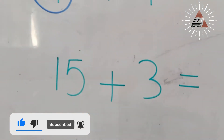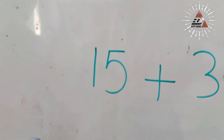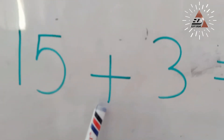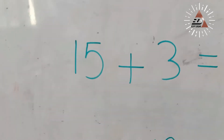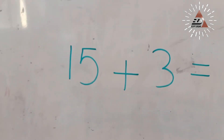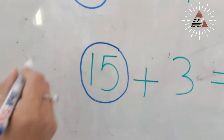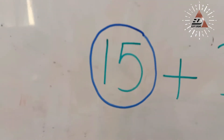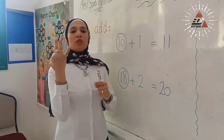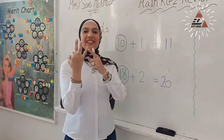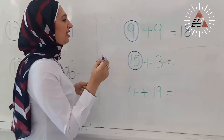Hey KG2. What is this number? 15 plus 3. Which one is the bigger number? Yes, 15. Put 3 on your hand. Count after 15: 16, 17, 18.